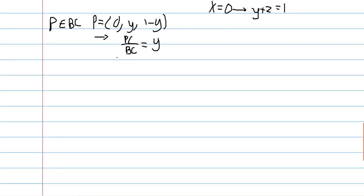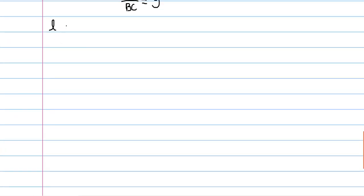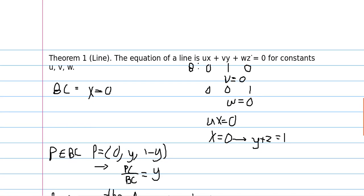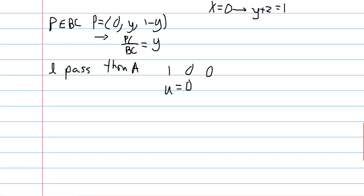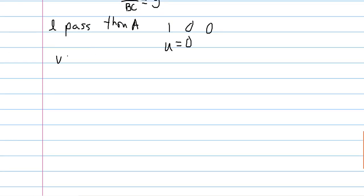Alright, so let's think about some line, let's say a line l passes through a. Then we know that we're plugging in the coordinates 1, 0, 0 into the ux plus vy plus wz, and so we just get that u equals 0. Plugging that back in, we know that vy plus wz equals 0. But v and w are just constants, and if we assume they're non-zero, then we just have that y is equal to kz. So the equation of any line through a is just y equals kz.